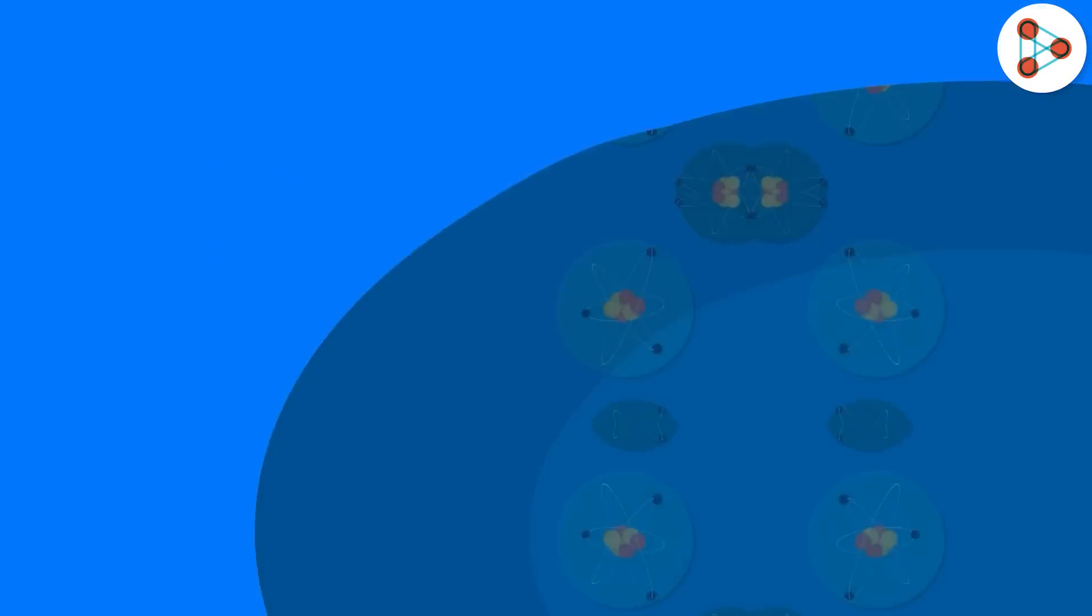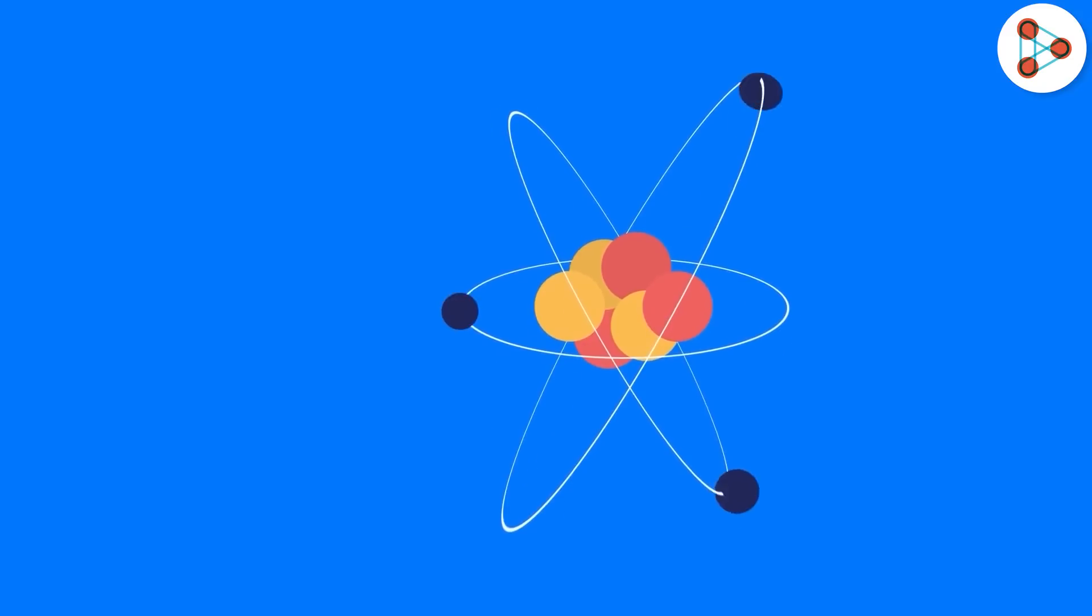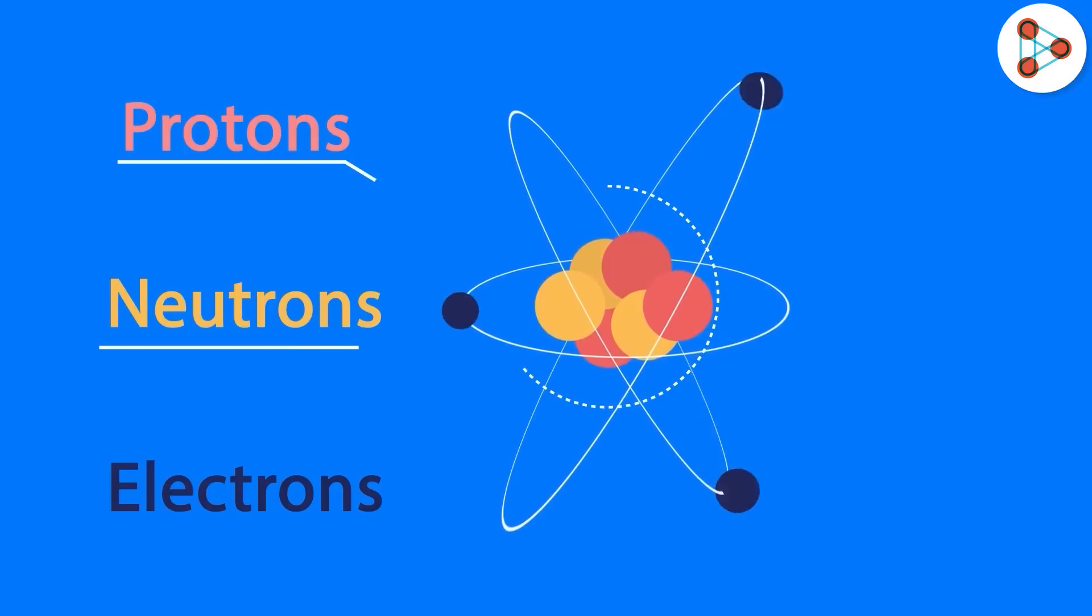And do you know what the building blocks of atoms are? They are protons, neutrons, and electrons. The protons and the neutrons are densely packed in the nucleus, and the electrons orbit around the nucleus.